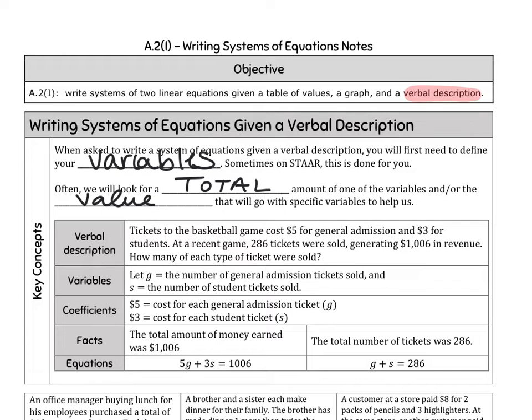In this first example here, we're going to annotate this. It says tickets to a basketball game cost $5 for general admission and $3 for students. At a recent game, 286 tickets were sold, generating $1,006 in revenue. How many of each type of ticket were sold? This is kind of a puzzle that we can solve using a system of equations. The very first thing we're going to do is we're going to define our variables.